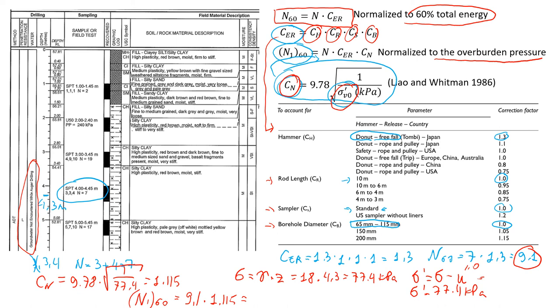It will give us approximately about 10.1. So this is going to be the value after we have corrected the real field value and normalized it to 60% of total energy and overburden pressure. Thanks for watching this video and have a nice day.